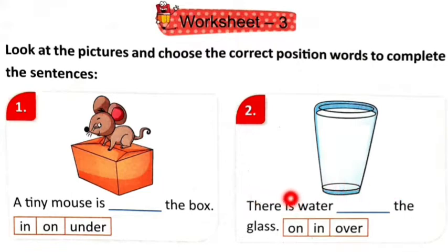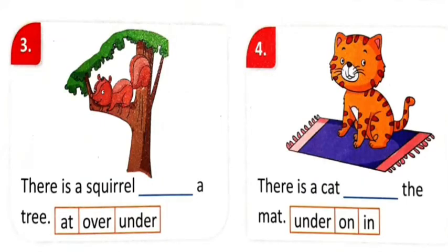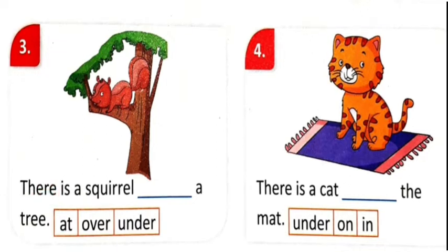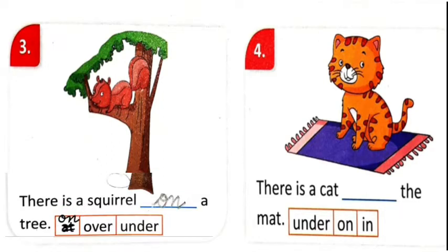Number two: 'There is water ___ the glass.' Glass mein water kahaan hai? On, in, ya over? Correct position word choose karke aap blank mein likh denge. Number three: 'There is a squirrel ___ tree.' Yahaan par ek correction karenge — jo 'at' given hai us 'at' ko cut karke aap 'on' likh denge, kyunki squirrel on the tree hai. Toh aap likhenge: 'There is a squirrel on a tree.'